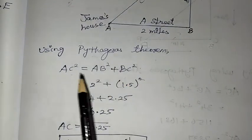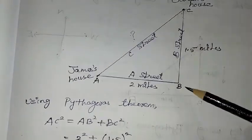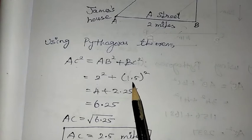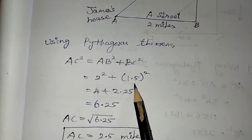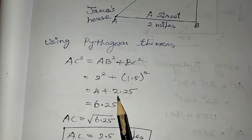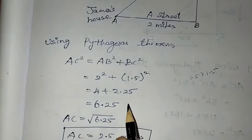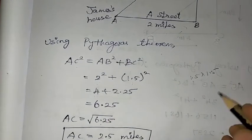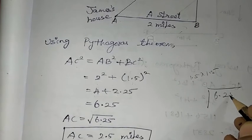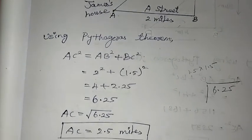AC square equals 2 square plus BC square. 2 square is 4, 1.5 times 1.5 is 2.25. So this is 4 add 2.25 equals 6.25. Now we take the square root. We know that square root of 625 is 25, then square root of 6.25 is 2.5.